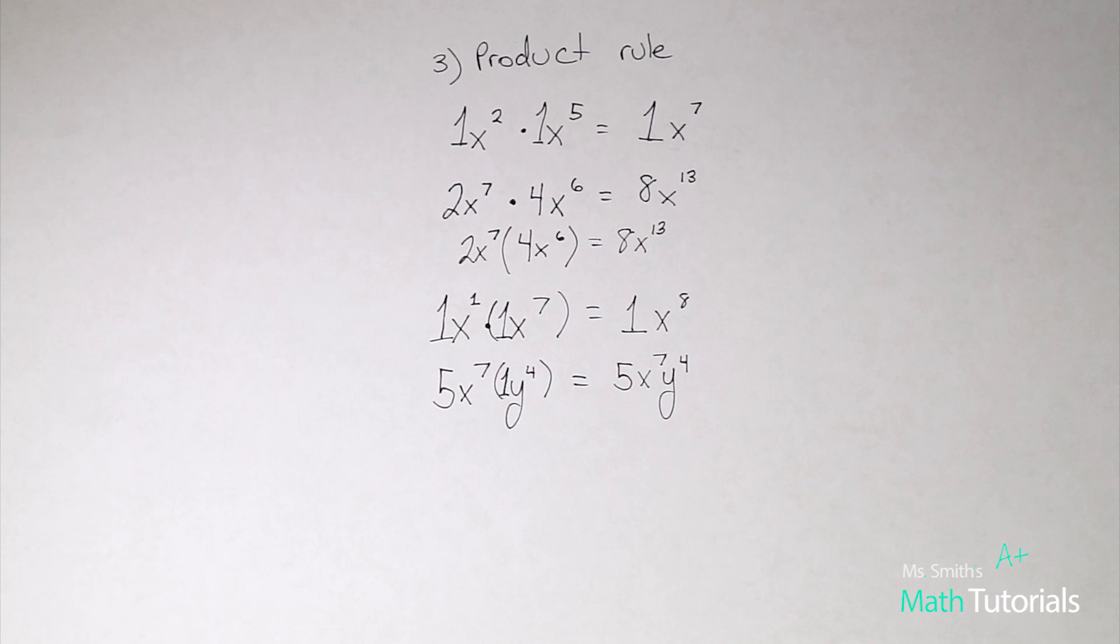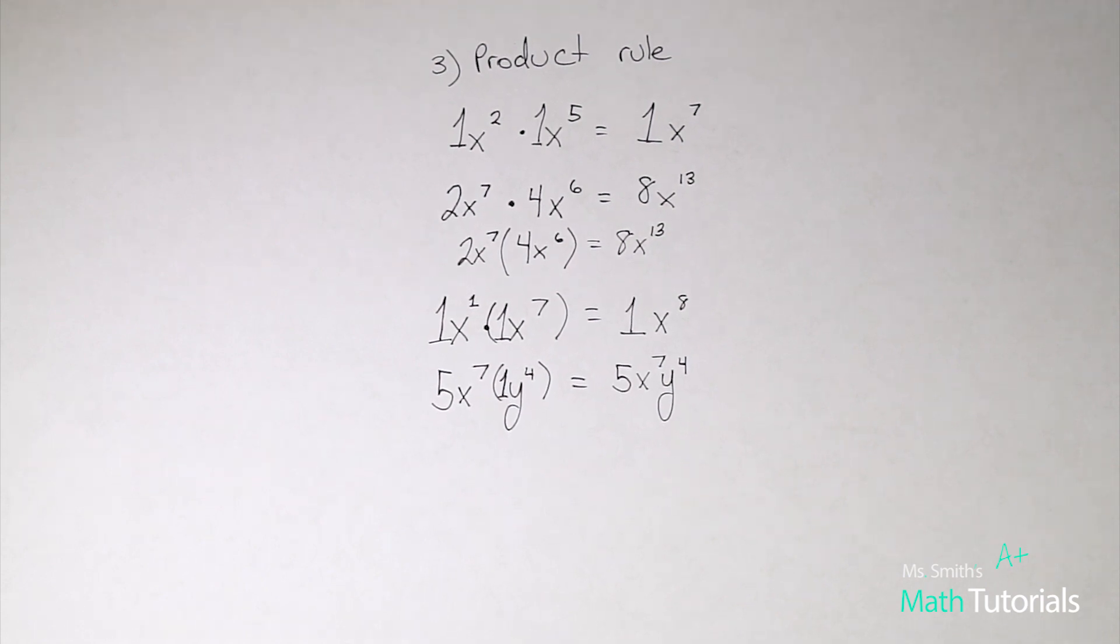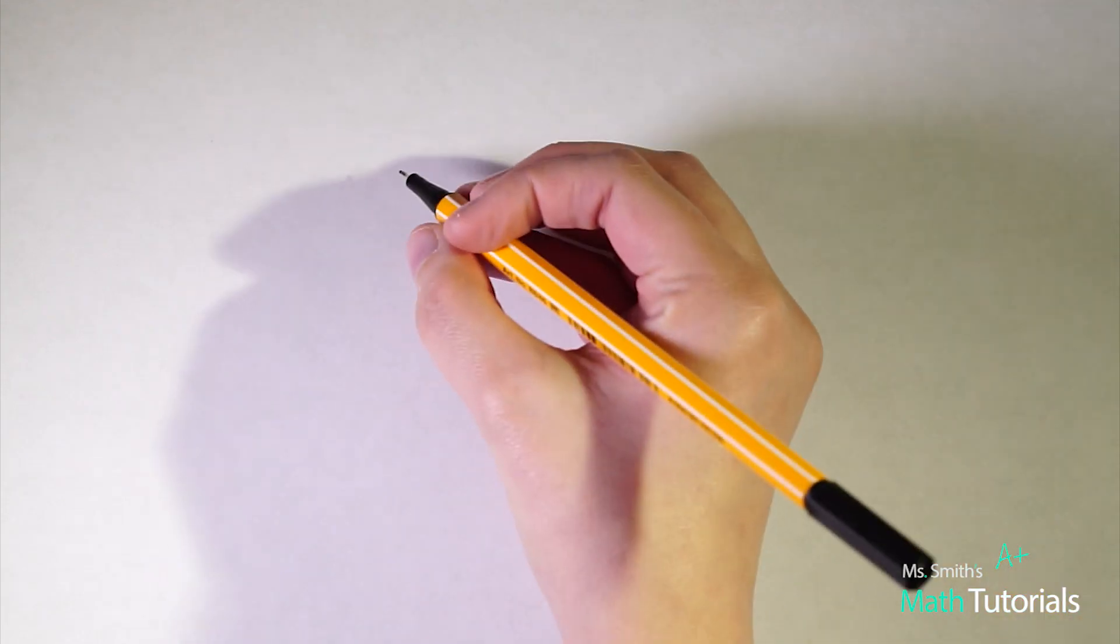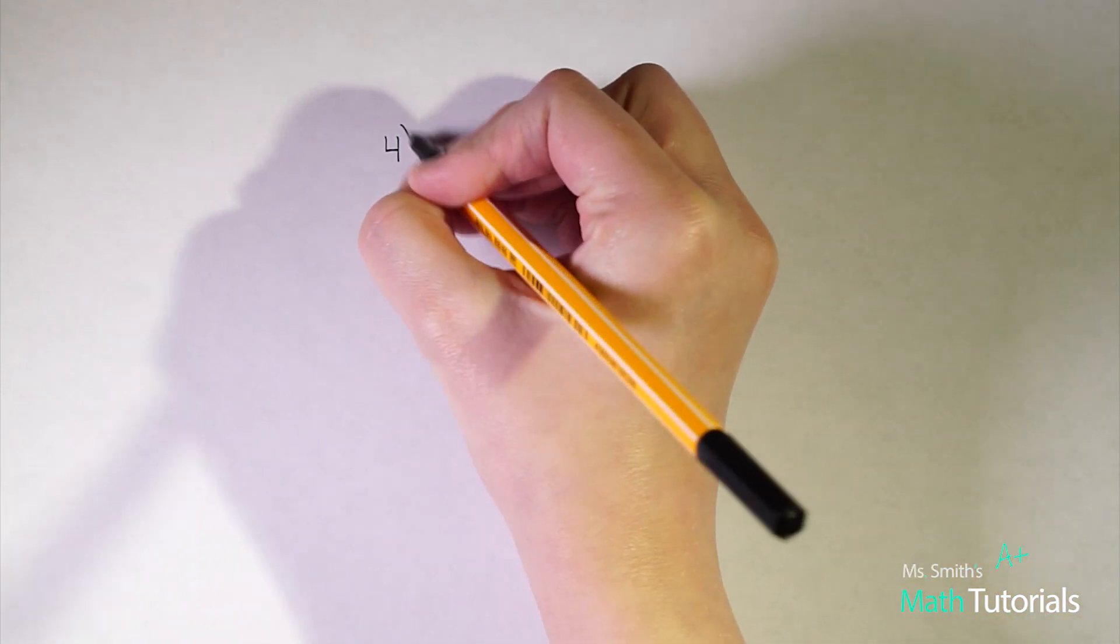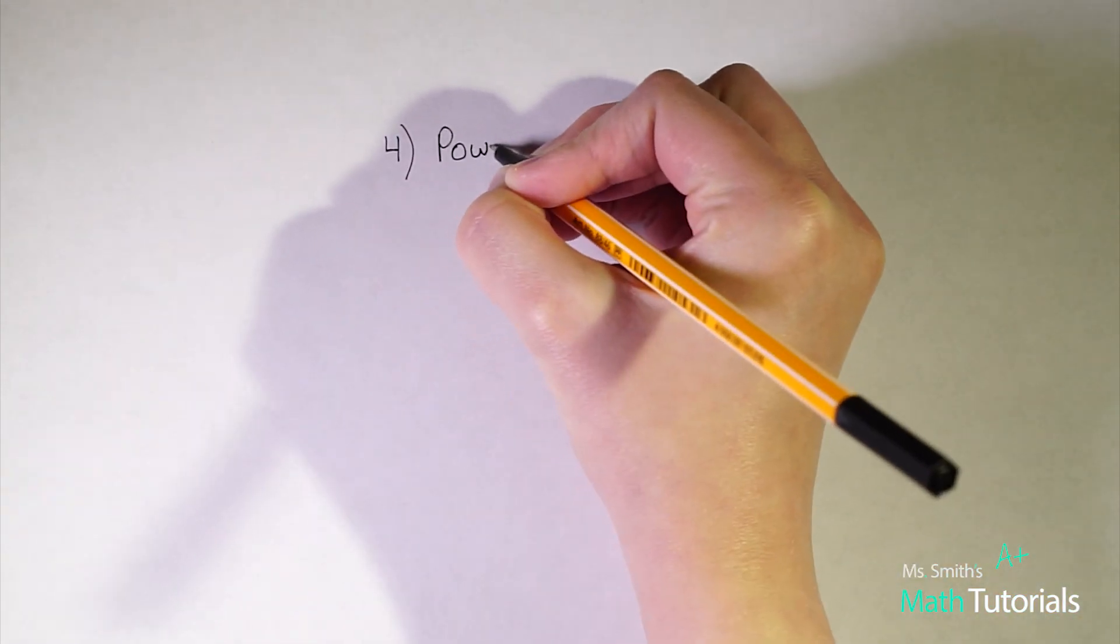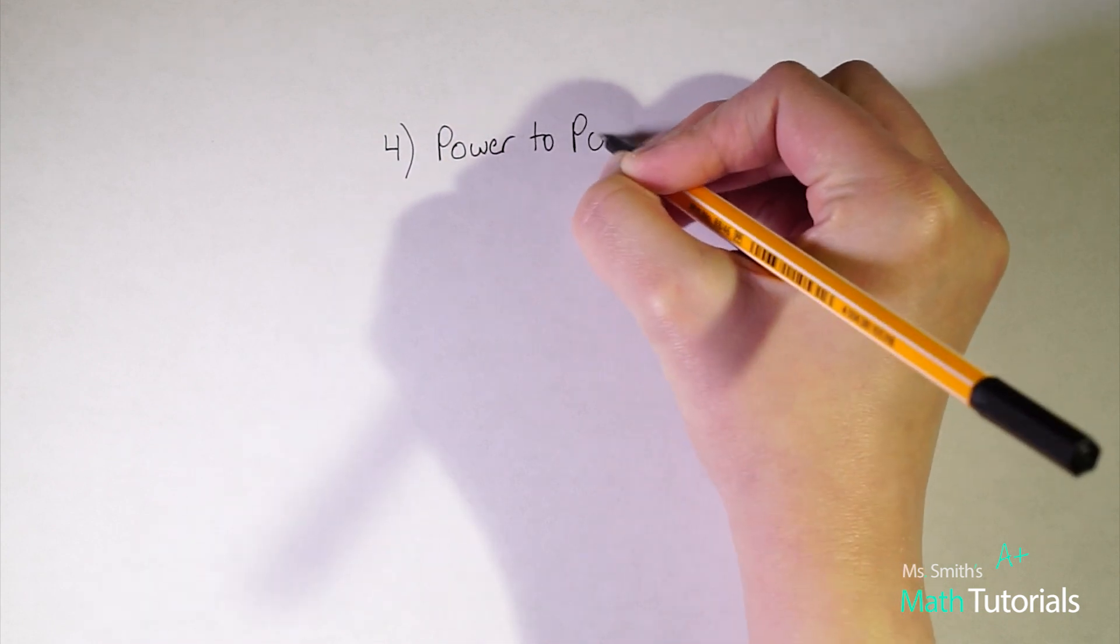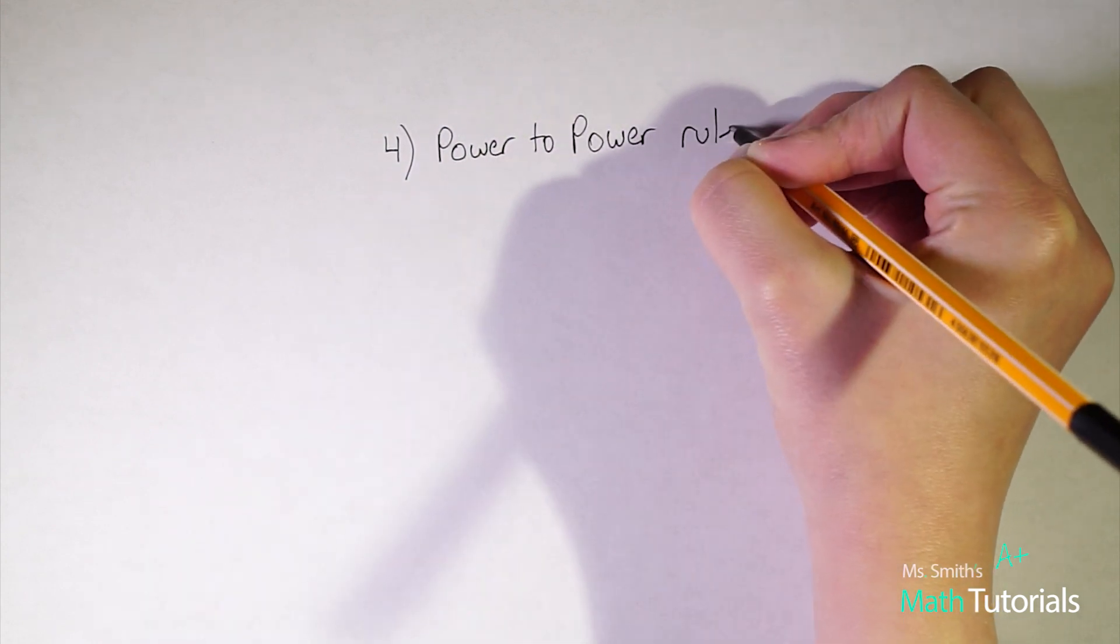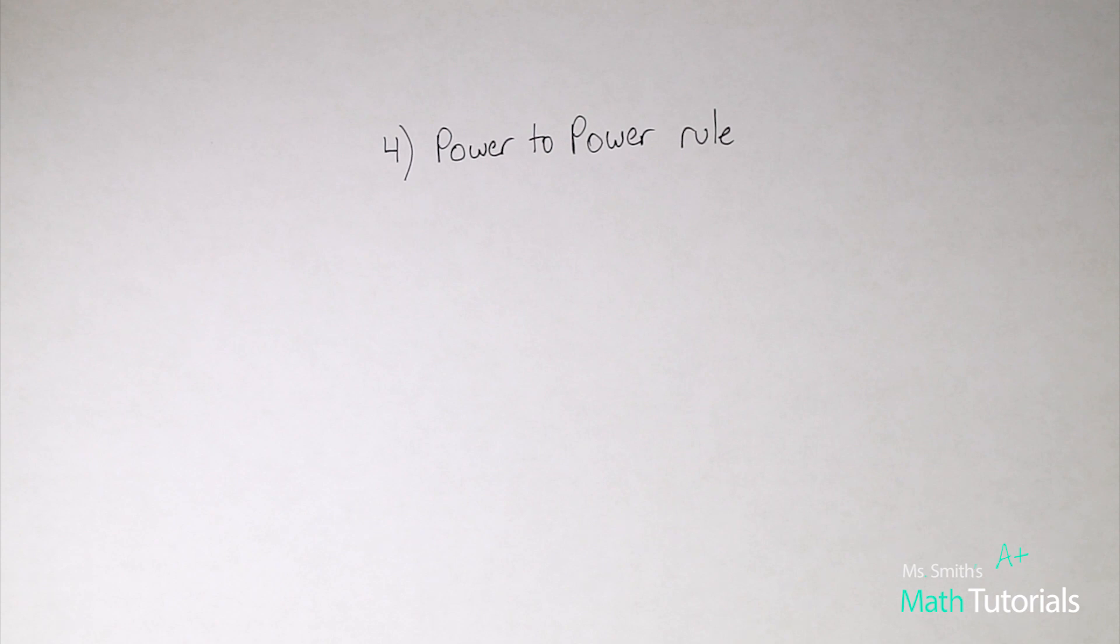So that is the product rule and now we're going to move on to something called the power to power rule. The fourth rule of exponents that we're going to talk about today is called the power to power rule. Now this rule a lot of times students confuse it with the product rule because both of them involve multiplying but they are very different.